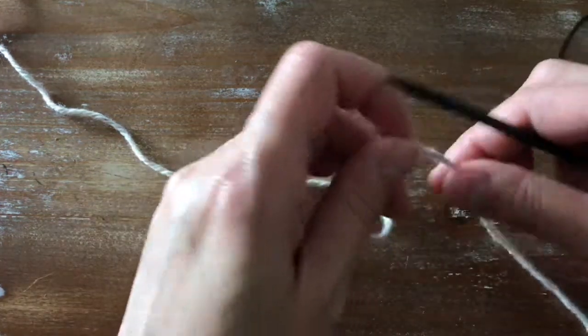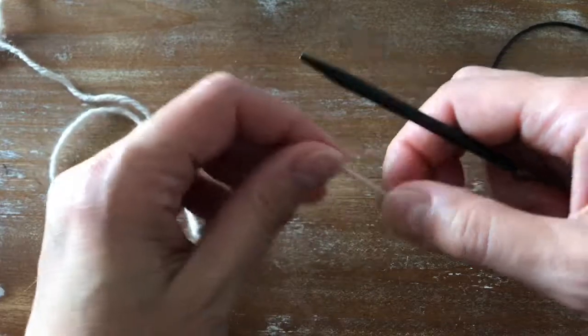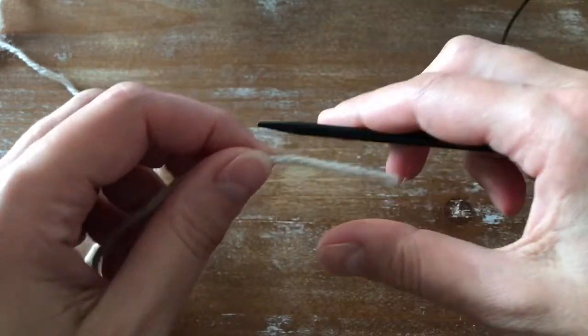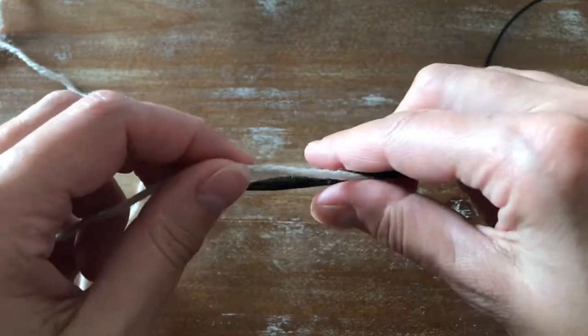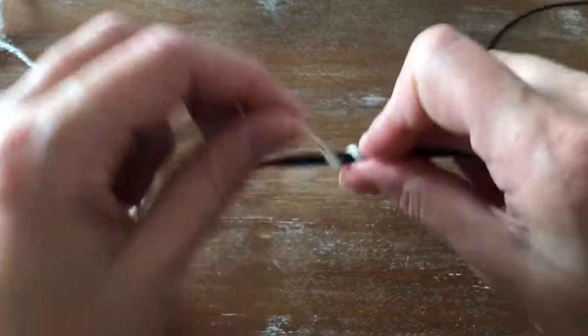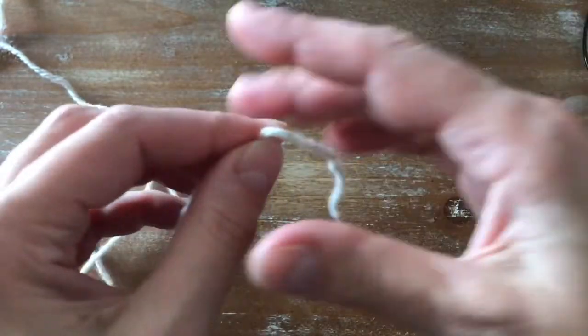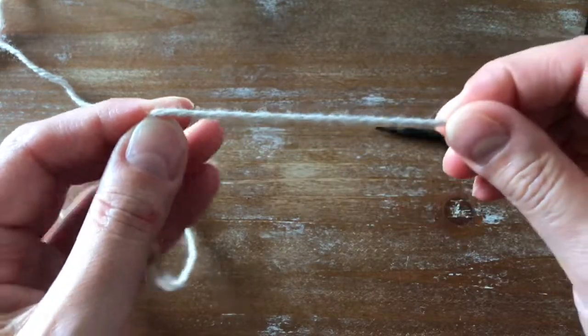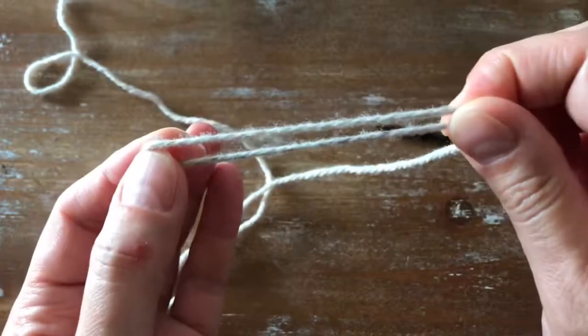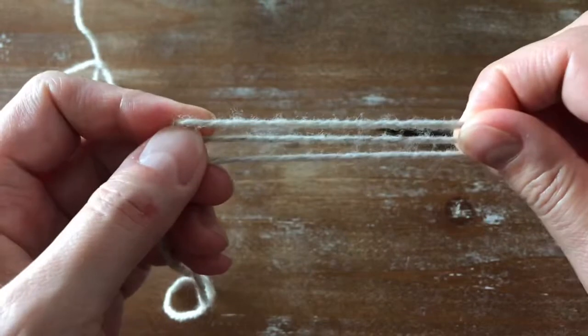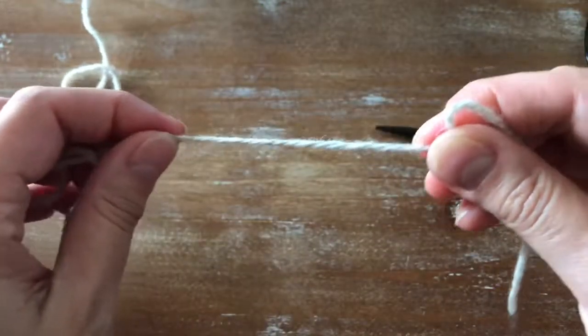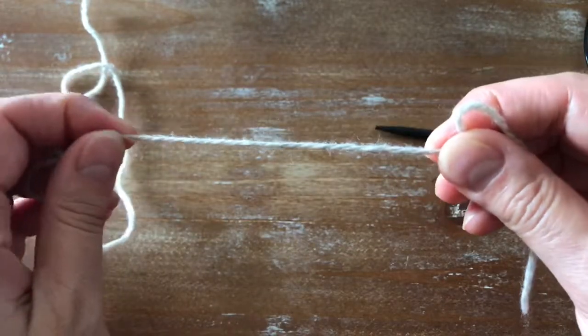Before we get started, we need to estimate the amount of yarn needed for the long tail. I'll be casting on 15 stitches, so I'm going to wrap the yarn around the needle five times. This will give me the amount of yarn needed to make five stitches. I'm going to double it for 10 and triple it for 15. I'm also going to leave a little bit of extra yarn at the end for weaving in.